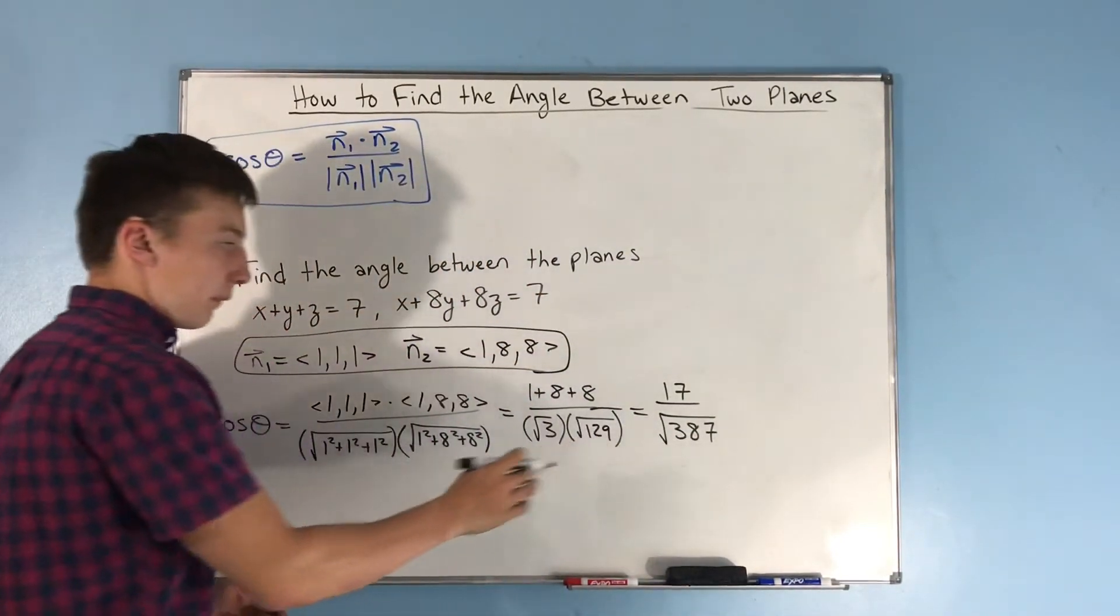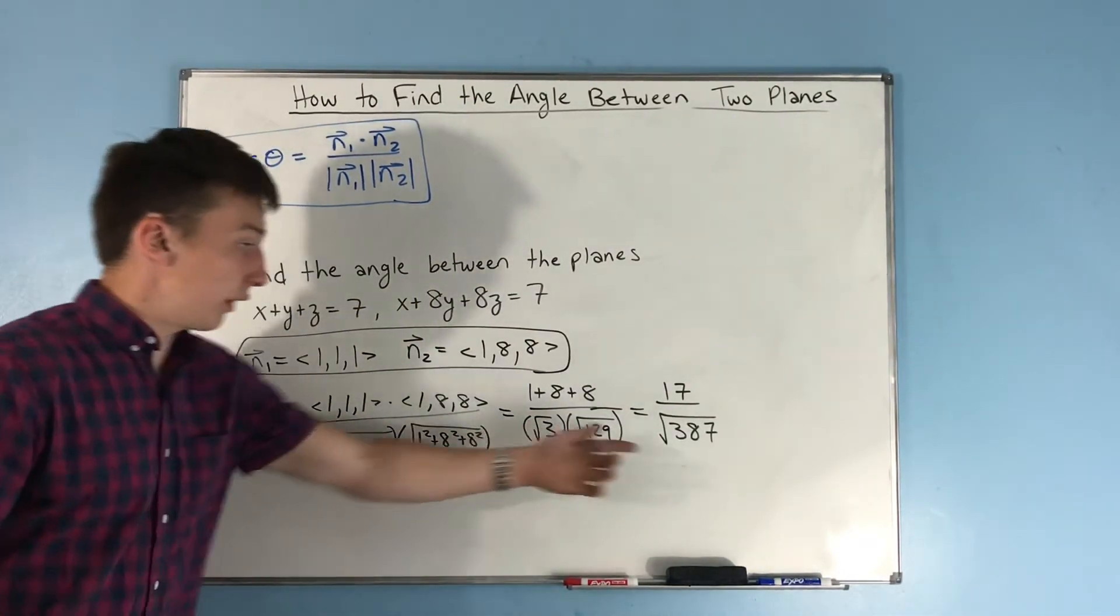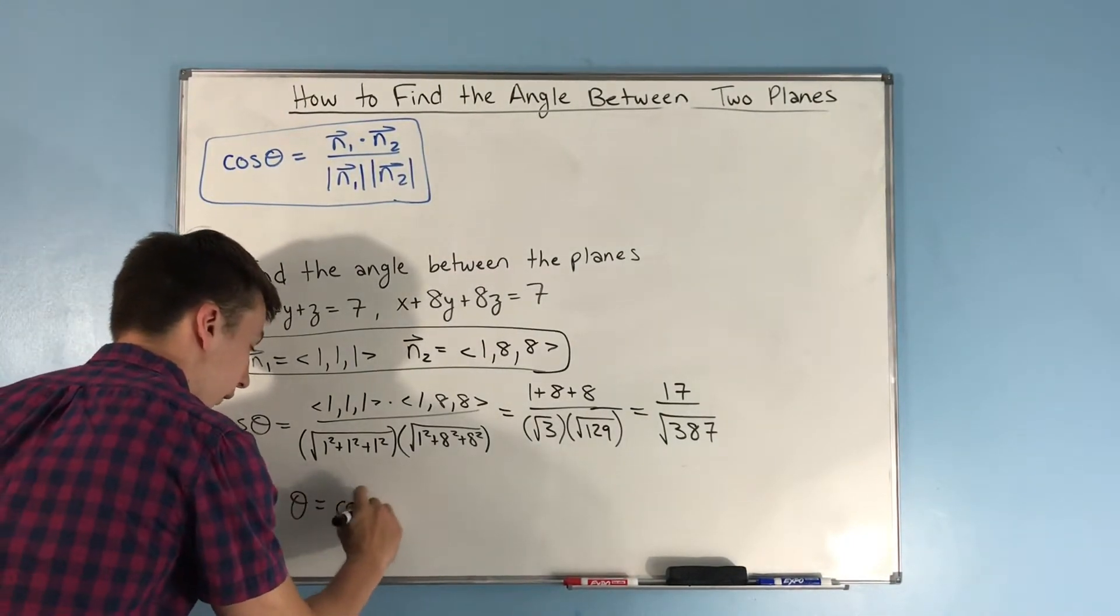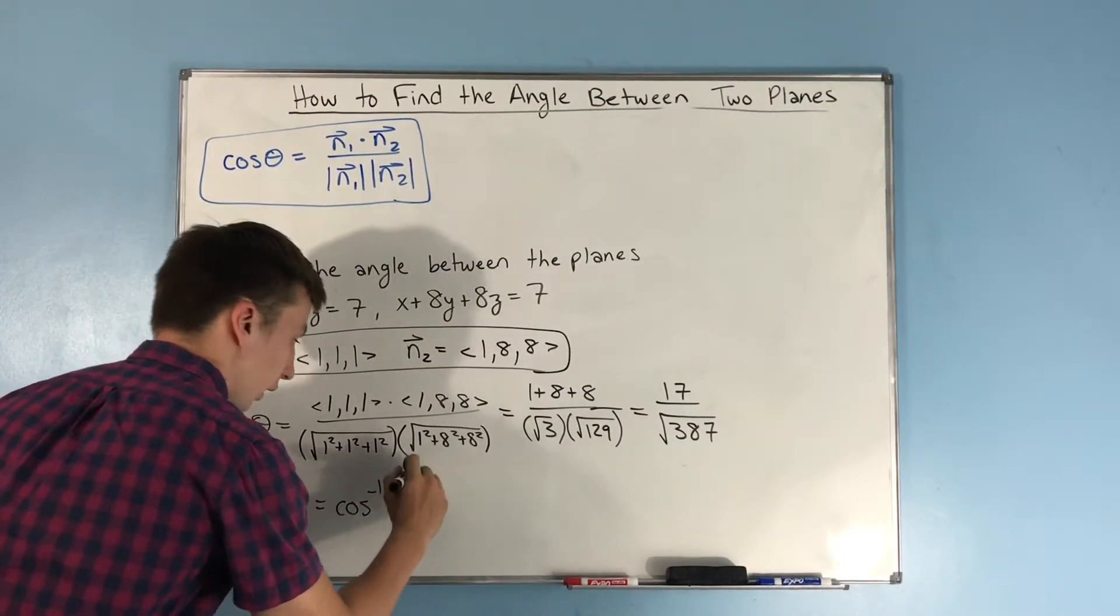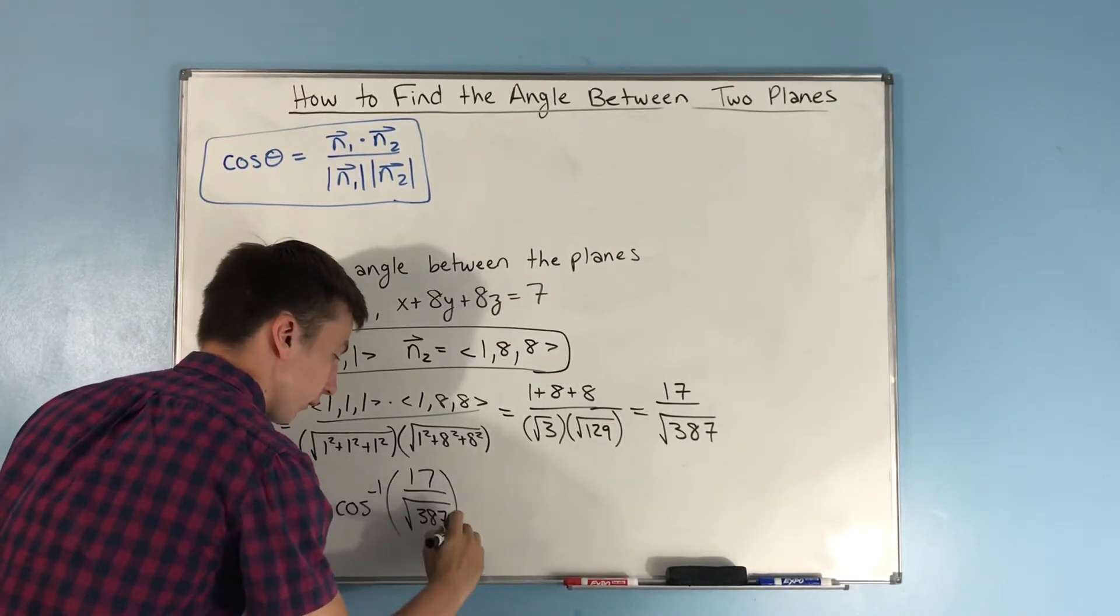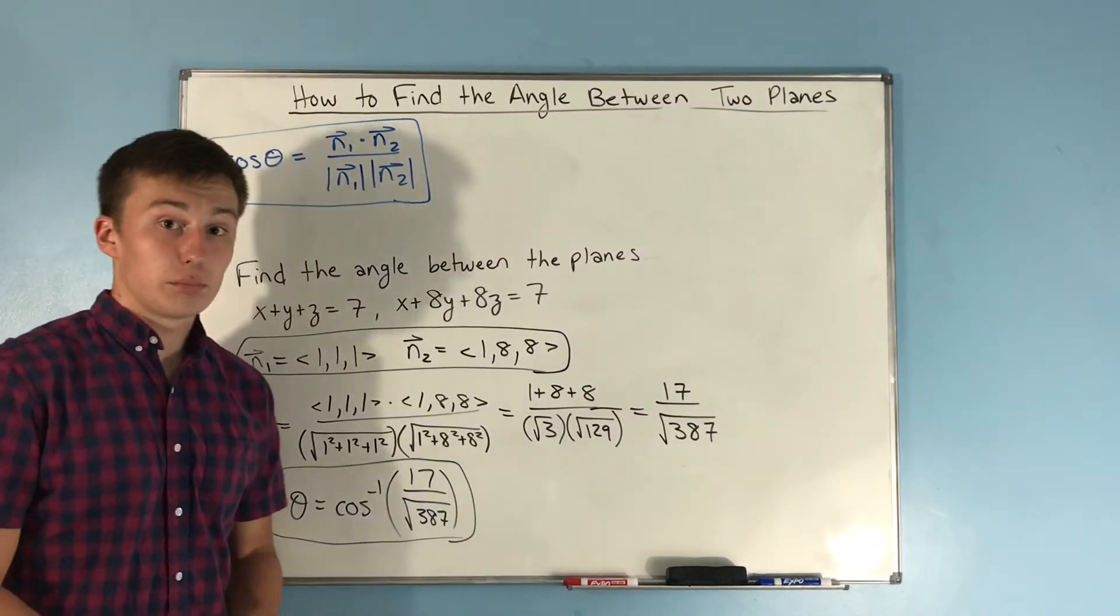So this is equal to cosine theta. So if we take the inverse cosine of this, what we get is that theta equals the inverse cosine of 17 over rad 387. And there you go. That's your angle. That's it.